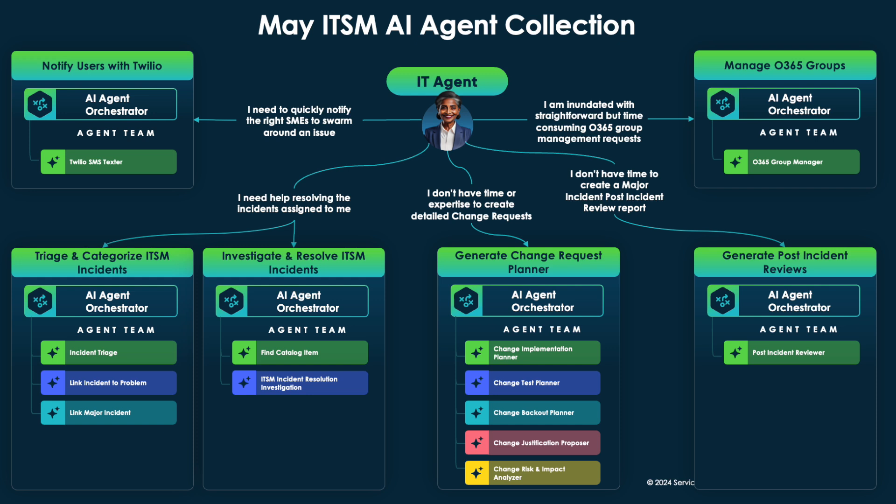Key features include a Manage Office 365 Group Agent that lets you add and remove members from a Microsoft 365 Group. The Change Request Planner can also generate justification, change risk, and impact analysis, as well as a brand new Investigate and Resolve ITSM Incident set of agents, which will look for catalog items or recommend a solution based on past incidents or knowledge.